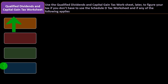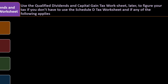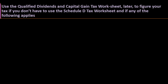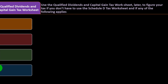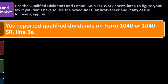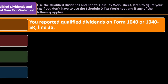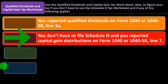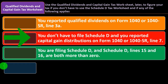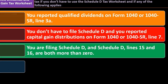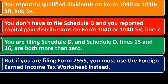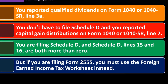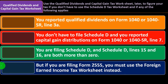Use the Qualified Dividends and Capital Gains Tax Worksheet to figure your tax if you don't have to use the Schedule D Tax Worksheet and any of the following apply: you reported qualified dividends on Form 1040 or 1040-SR Line 3A; you didn't have to file Schedule D and reported capital gain distributions on Line 7; or you are filing Schedule D and Schedule D Lines 15 and 16 are both more than zero. If you are filing Form 2555, you must use the Foreign Earned Income Tax Worksheet instead.